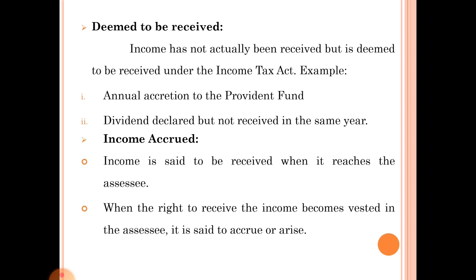The next term is 'income accrued'. Income is said to be received when it reaches the assessee. When the right to receive the income becomes vested in the assessee, it is said to accrue or arise — meaning income is already accrued or declared but not yet received. That is known as income accrued. For example, interest accrued on a mutual fund or interest accrued on a fixed deposit. It is automatically accrued every year, but it is not necessarily received by the assessee yet.